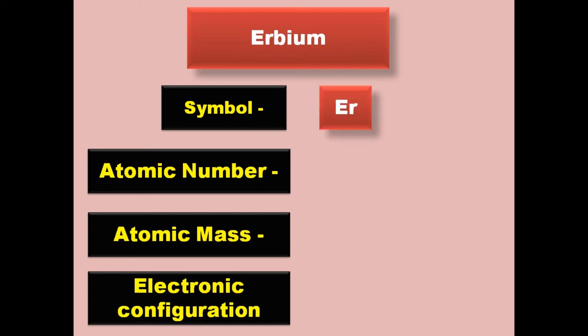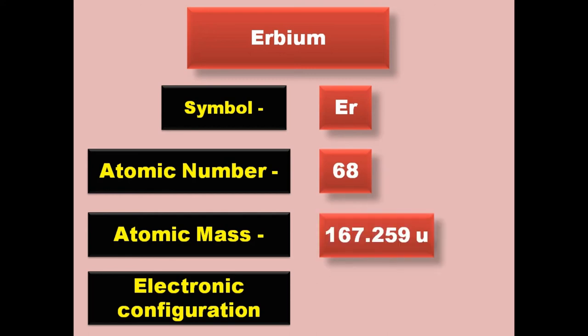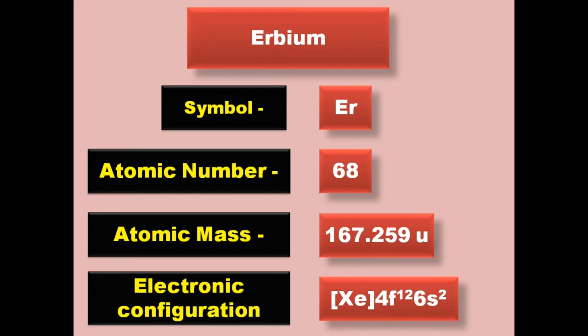Erbium has symbol Er, atomic number 68, atomic mass 167.259, electronic configuration [Xe] 4f12 6s2. Erbium is a lanthanide and exists in solid form at room temperature.